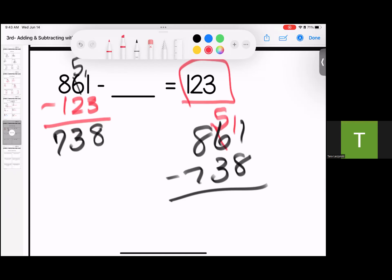Let's check it. 11 minus 8 is 3, 5 minus 3 is 2, 8 minus 7 is 1. There we go. So my missing number, 738.